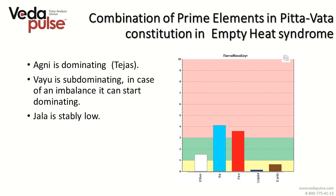Fire would dominate in this constitution type and Vata would be subdominant. But in the picture shown, fire is subdominant and Vata is dominant — this was done on purpose, so you remember that in chronic diseases connected with dryness of Vata, Vata would dominate. One of the main features of this constitution type is a stably low JALA. The specialist should remember that this syndrome is not about dominance but about emptiness on the background of dominance.